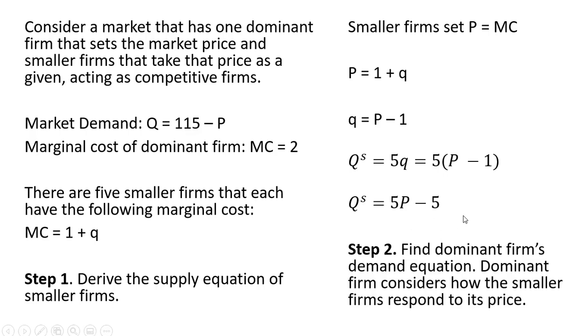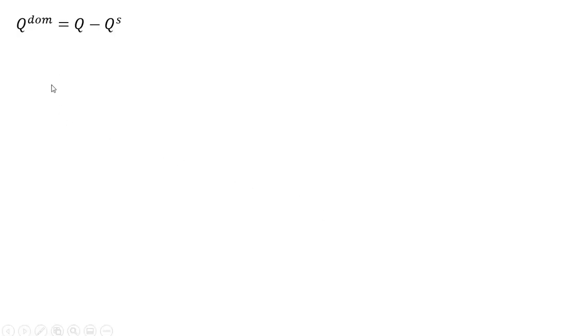Step two, we want to find the dominant firm's demand equation. The dominant firm considers how the smaller firms respond to its price when setting its price. So the dominant firm's demand equation is going to be the market demand minus the supply of the smaller firms. So the market demand was given as 115 minus the price. Now we're going to subtract out the supply of the smaller firms.